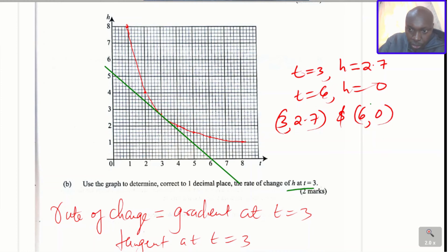So how do you get the gradient? A change in y over a change in x. So therefore, the gradient will be given by change in y, which is 0 subtract 2.7, divided by the change in x, 6 subtract 3. And these will give negative 2.7 divided by 3. And that is the rate of change at t is equals to 3. So that is how I was supposed to do that question.